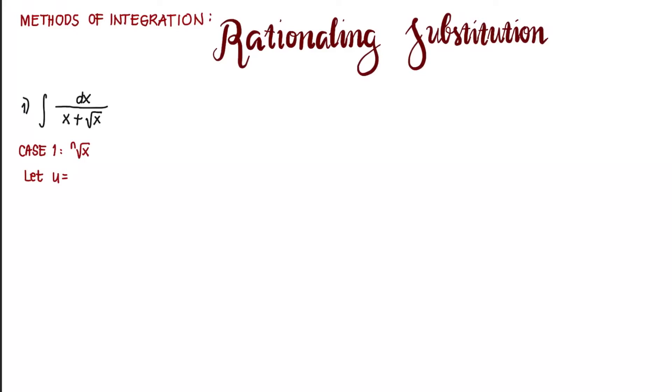Remember that n here should be the LCD of all fractional exponents. But since we only have one radical here and the index is 2, we simply let u be equal to the square root of x. After which, we remove the radical sign by raising both sides to the power of 2. So u squared is equal to x.